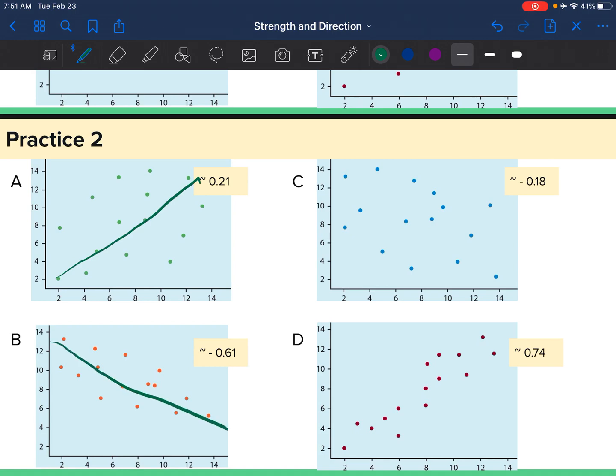I have a negative line here. It is in the middle. I'm a little bit more strong, stronger than it is weak. So it's about a negative 0.61.